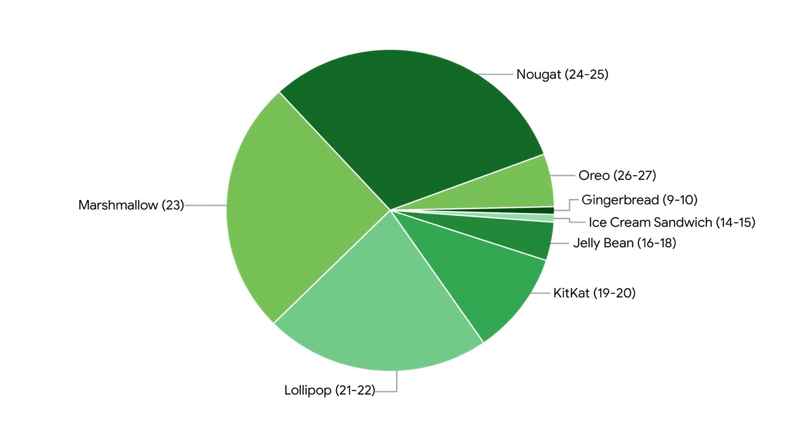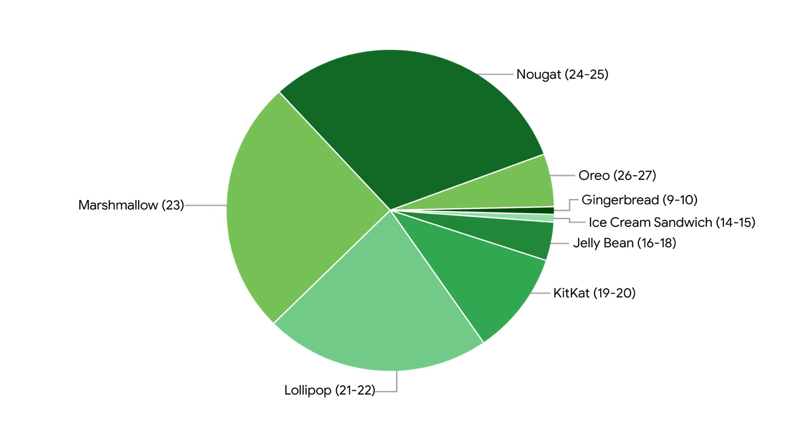And that's exactly what Oboe does. It's a C++ library which makes it easy to obtain the lowest possible audio latency on any given Android device. It works with APIs 16 and above, which means it's compatible with over 99% of Android devices.